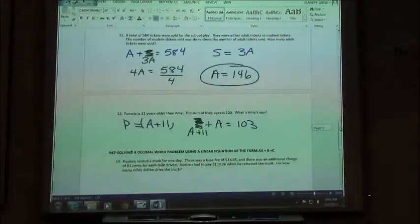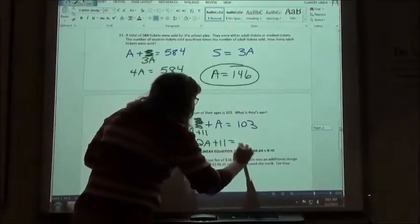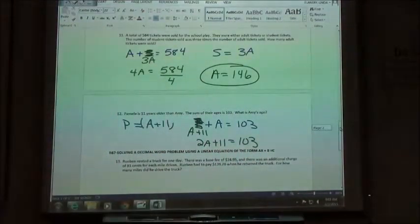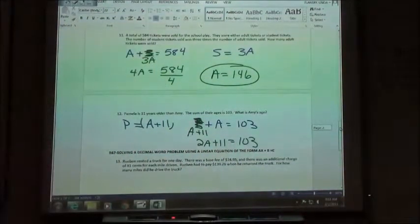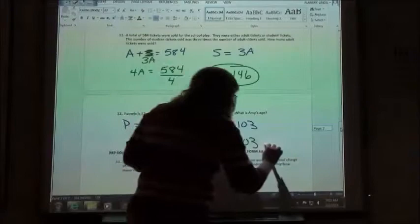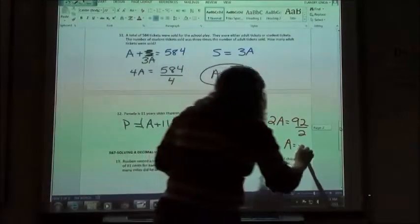So combining my like terms, I'm going to get what? 2A plus 11 equals 103. And if I'm going to solve that for A, the first thing I should do is subtract the 11. So 2A is going to equal what's 103 minus 11? 92. 92. And then I'm going to? Divide. Divide by 2. And 92 divided by 2 is? 46. 46.